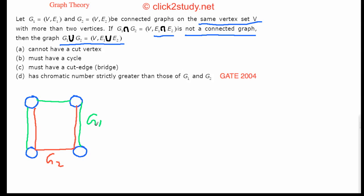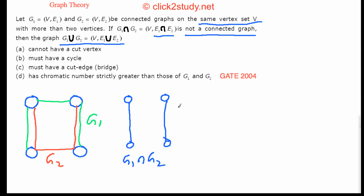Taking the intersection of G1 (green) and G2 (red), I keep only the edges common to both. These are the only common edges, so G1 ∩ G2 looks like this. It satisfies the condition of being disconnected. So this is one valid example.